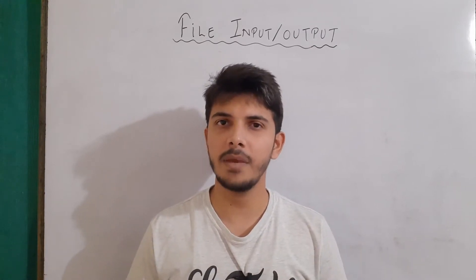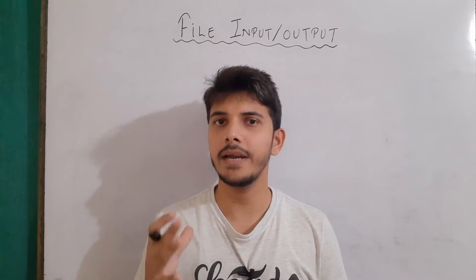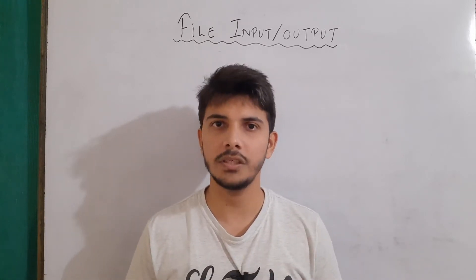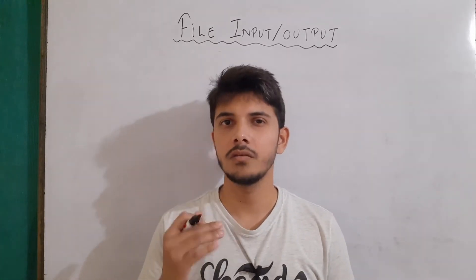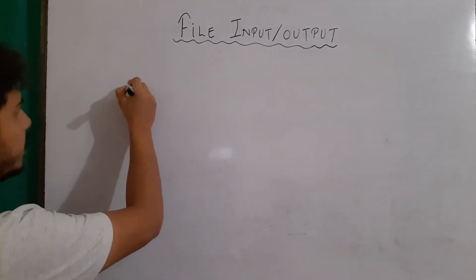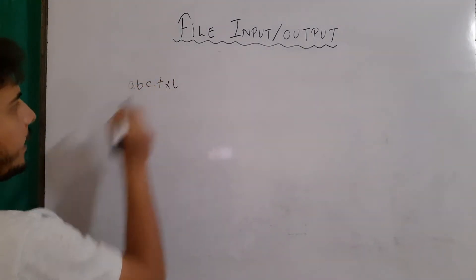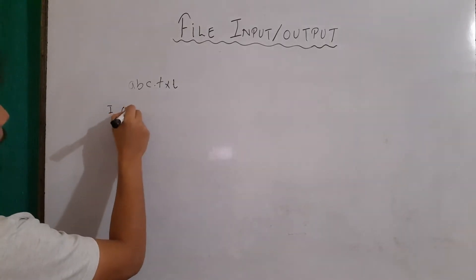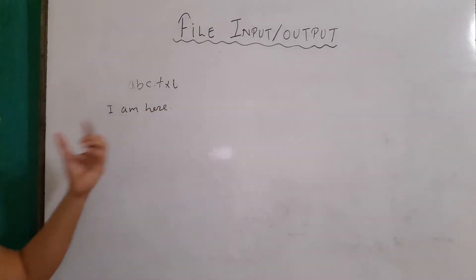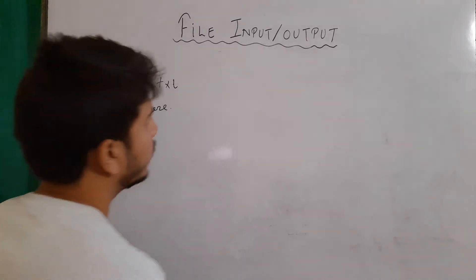So in C programming, we will see what are the various utilities that are provided to the programmer to perform these operations. So let's say there is a file with the name abc.txt and the content is "I am here". And I need to read the content of this file using a program.